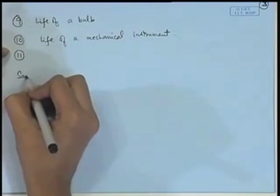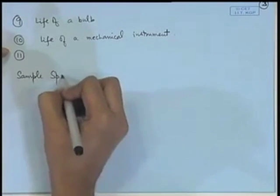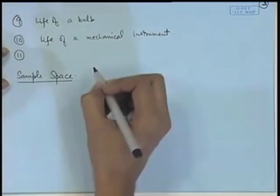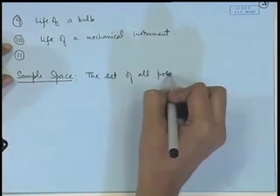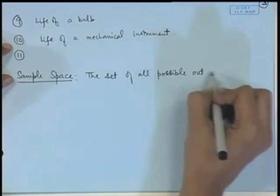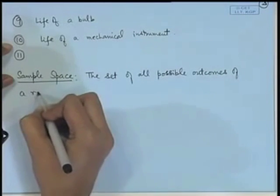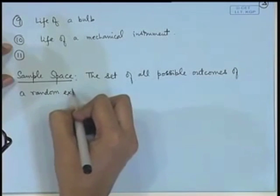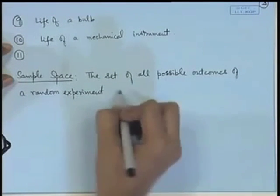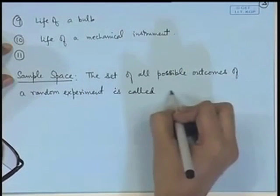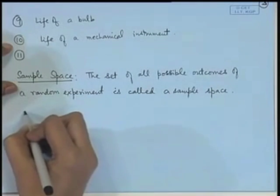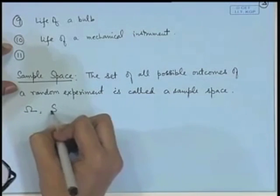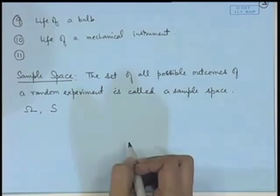The first is the concept of a sample space. The set of all possible outcomes of a random experiment is called a sample space. The usual notations we will use are either capital omega (Ω) or capital S to denote the sample space.